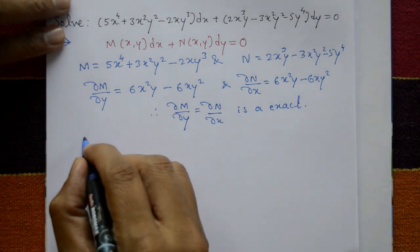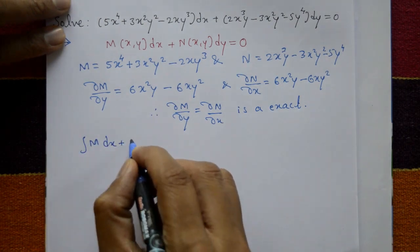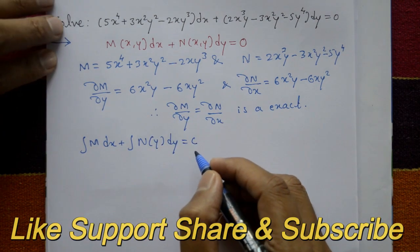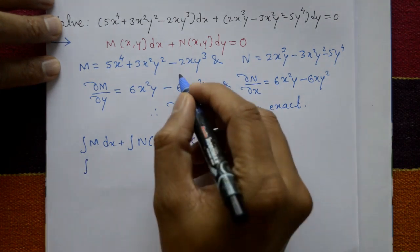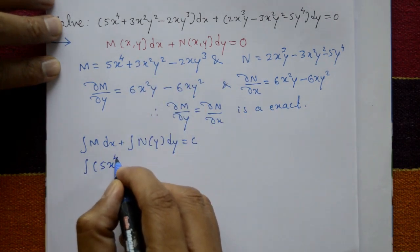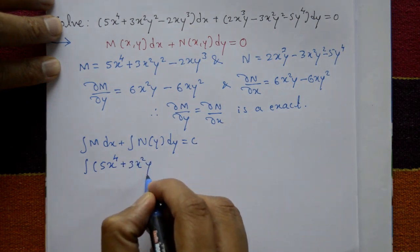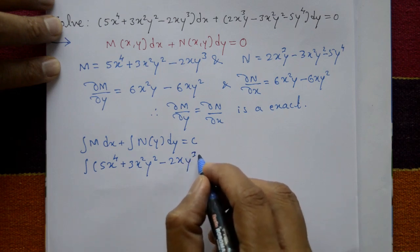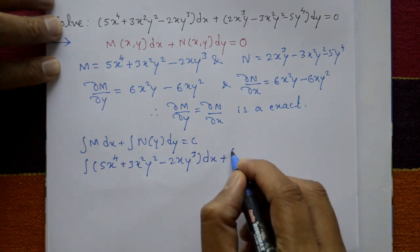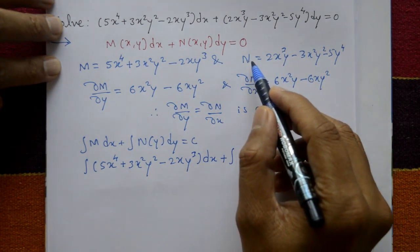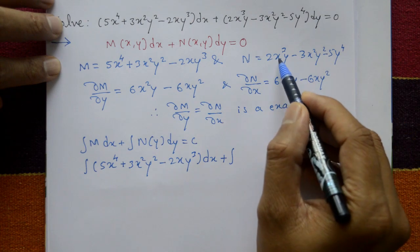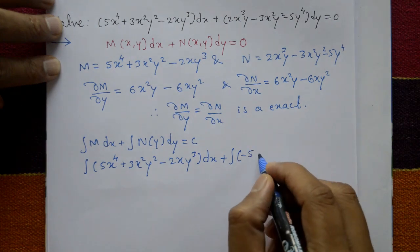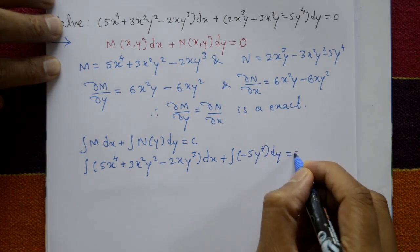Now integrate. The solution is: integration of M dx plus integration of the terms in N that do not contain x, with respect to y, equals c (the integral constant). From N, the term that does not contain x is -5y⁴, so we integrate that with respect to y.